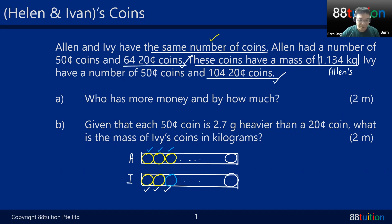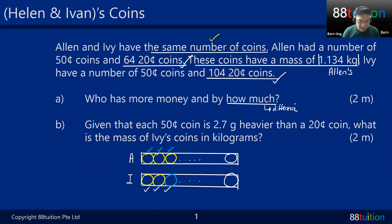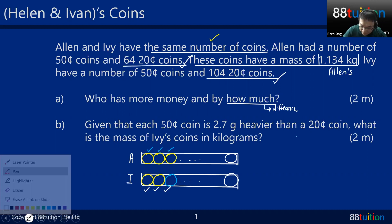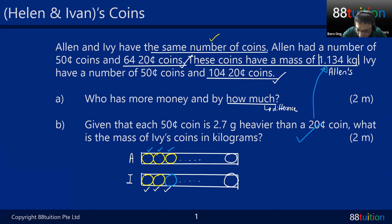The first question asks who has more money and by how much — we need to find the difference. The second part is about weight: each 50-cent coin is 2.7 grams heavier than a 20-cent coin. In Singapore the 50-cent coin is slightly bigger and heavier. The question asks for the mass of Ivy's coins in kg, which will link to the 1.134 kg figure for part B.